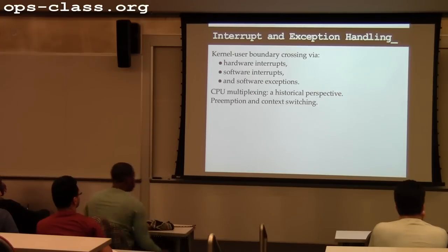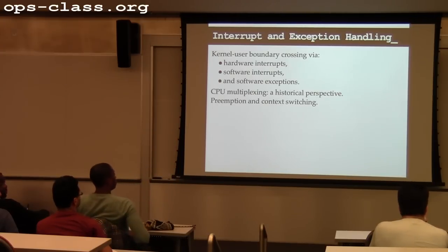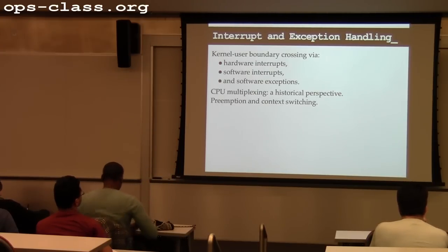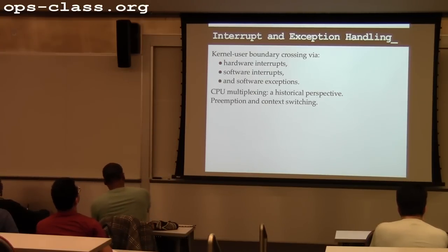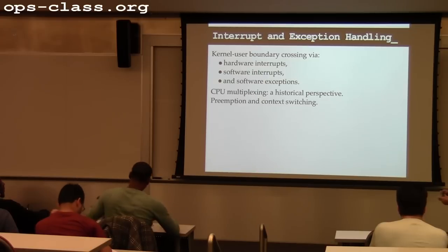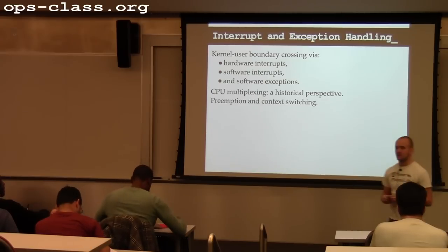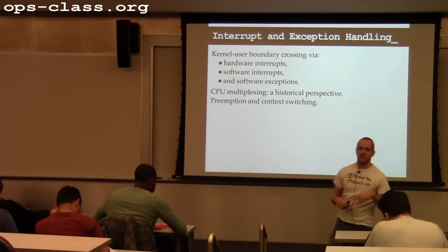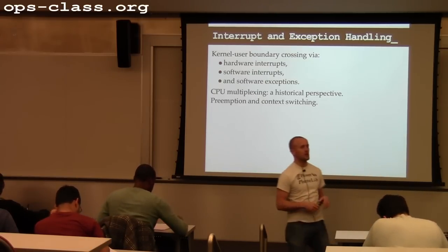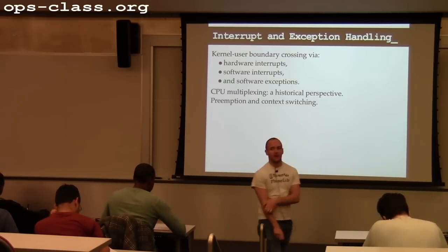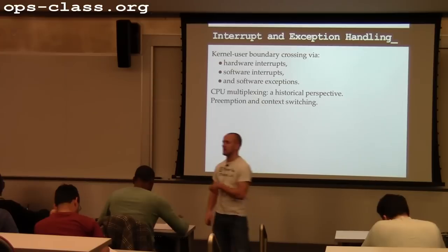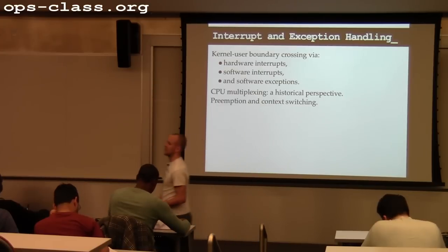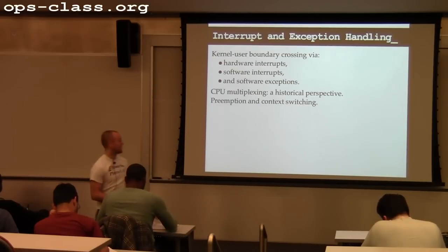So we'll finish talking about interrupts and exceptions. We'll talk a little bit about the historical rise of CPU multiplexing, and then talk about preemption and context switching and how that actually works in the kernel — specifically how the kernel switches between threads.